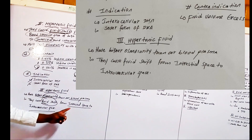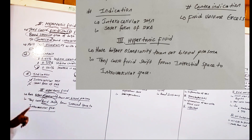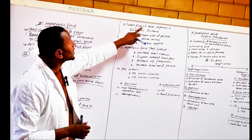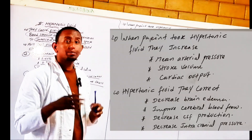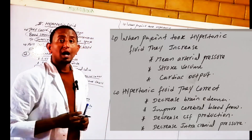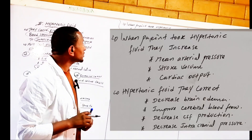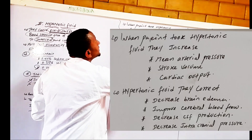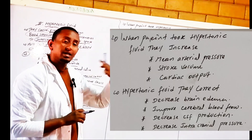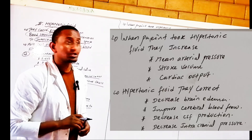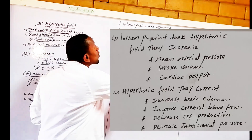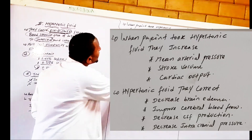Hypertonic fluid causes a fluid shift from the interstitial space into the intravascular space. When the patient is given hypertonic fluid, this results in increased mean arterial pressure and increased stroke volume, which also increases cardiac output.